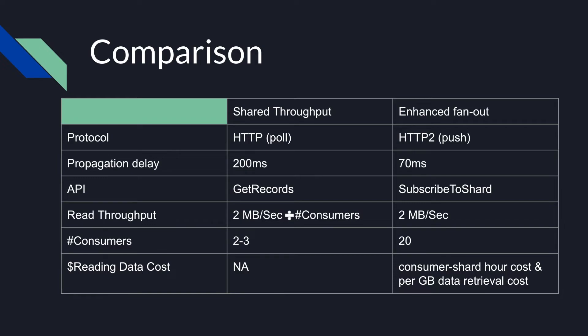You can also use both shared throughput and Enhanced Fanout with the same Kinesis stream. This allows you to have up to 20 consumers with dedicated throughput, as well as 2–3 consumers that share the 2 MB throughput. It's important to mention that reading data from a stream using Enhanced Fanout has cost dimensions associated with it, while shared throughput will cost you nothing. There is an additional hourly charge per Enhanced Fanout consumer, and a charge per GB of Enhanced Fanout data retrieval.